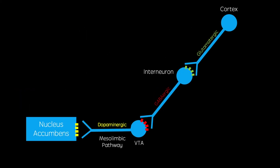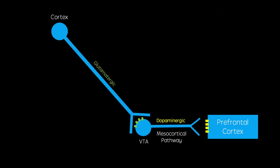So if we look at these pathways in healthy brains, glutamatergic neurons project to GABAergic interneurons. These release GABA, an inhibitory neurotransmitter, to the ventral tegmental area. This decreases the firing of dopaminergic neurons in the mesolimbic pathway. Cortical glutamatergic neurons also project to the ventral tegmental area directly, increasing the firing of dopaminergic neurons in the mesocortical pathway.